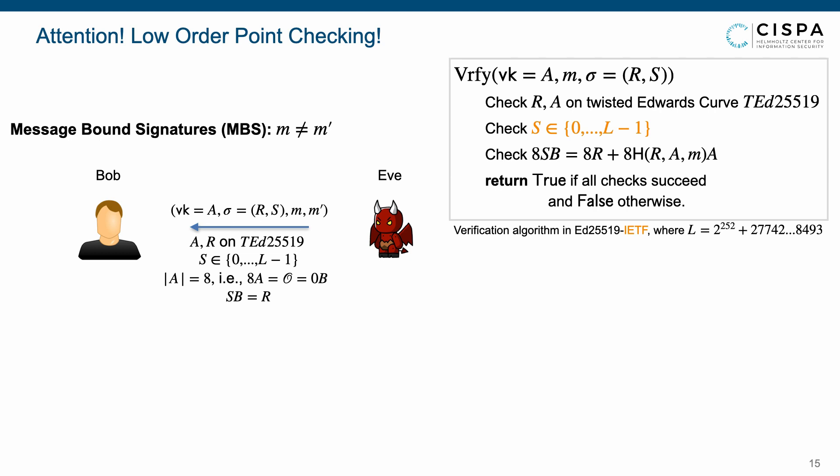Additionally, the point a also has low order 8, which means 8 times a equals the point at infinity O, and further equals 0 times b, and that sb equals r. Then, the zero check also succeeds. Therefore, the adversary can win for a pair with distinct messages m and m', which indicates that the IETF version does not have MBS.